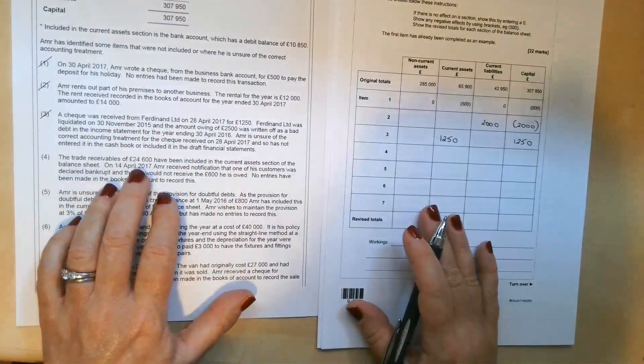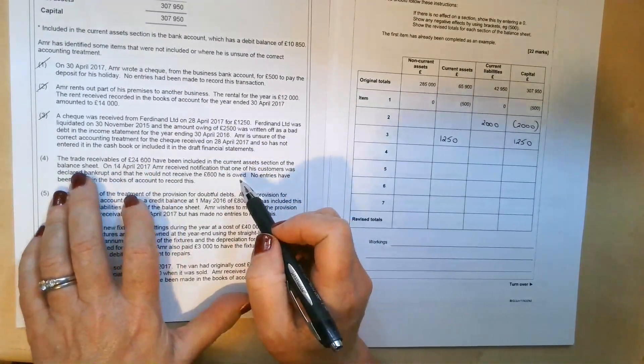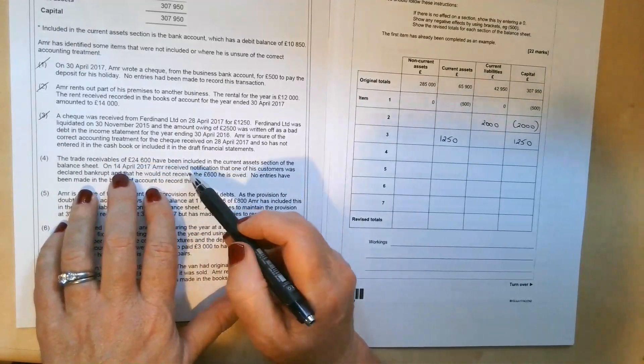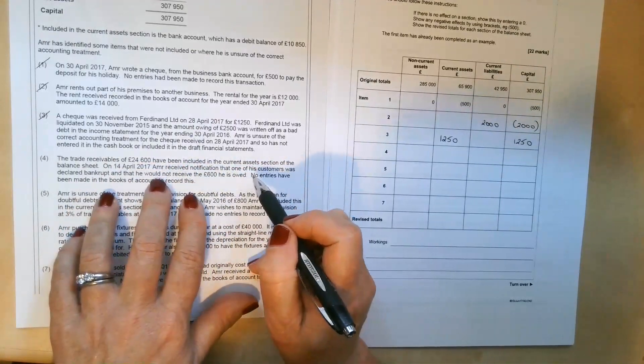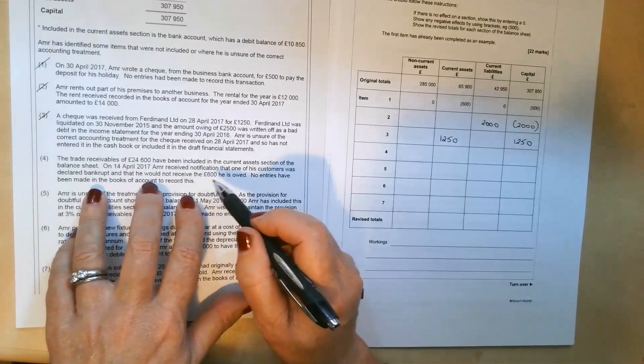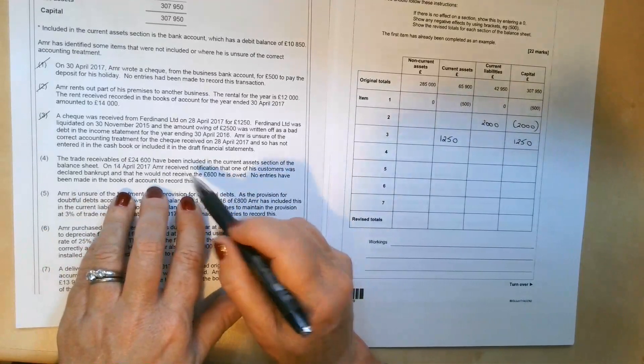Number four, the trade receivables of £24,600 have been included in the current assets section of the statement of financial position. On the 14th of April 2017, Amir received notification that one of his customers was declared bankrupt and that he would not receive the £600 he's owed. No entries have been made in the books of account to record this.